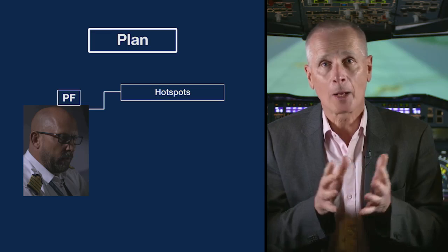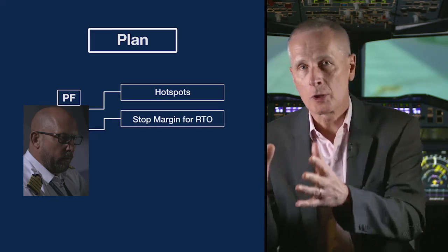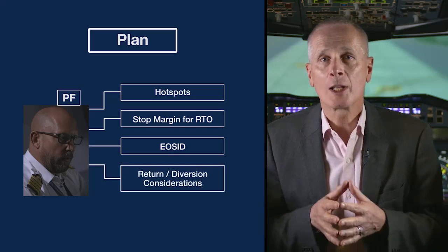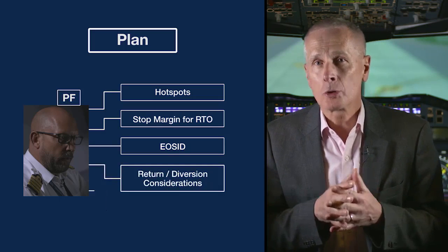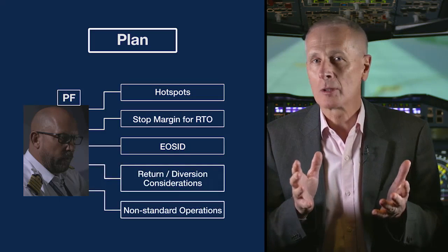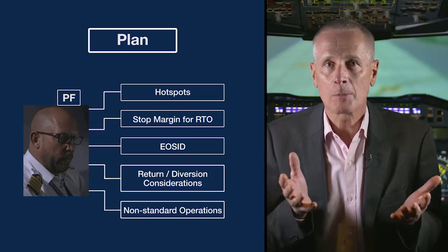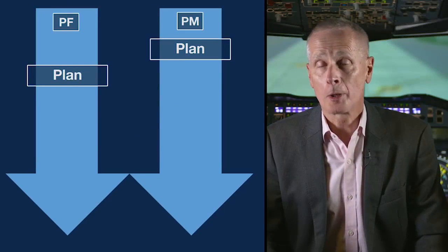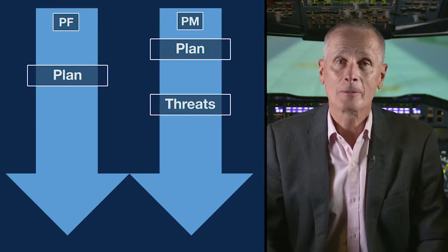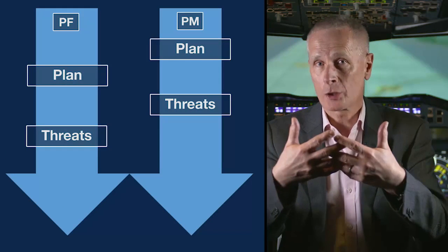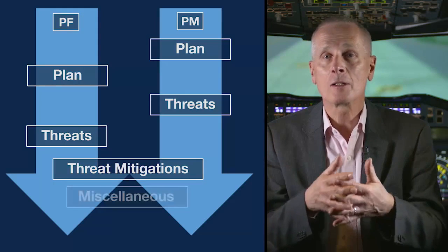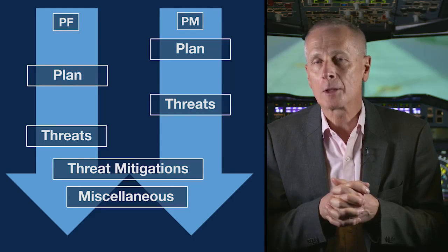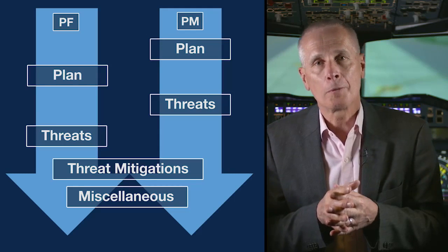This part contains items like hot spots of the planned taxi route, the stop margin for RTO, briefing of the engine-out departure route, and considerations for a potential return landing. It is a good idea to shortly recap non-standard operations at that stage. For example, if you have a cross-bleed engine start, it might be smart to briefly brief this procedure at that stage. For the identification of possible threats, it is again the pilot monitoring who starts. The briefing is continued with the joint discussion of the mitigation strategies, and at the end of the briefing there is a miscellaneous section. Items that could be discussed at this stage are the level of automation intended after takeoff, or you could take the opportunity to brief a cockpit observer.